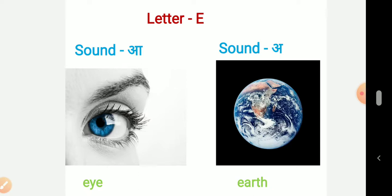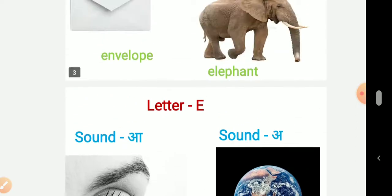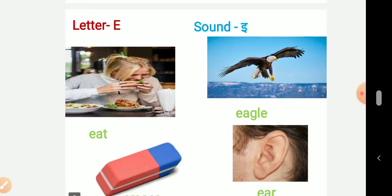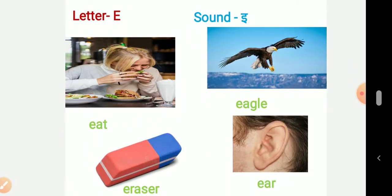So we have seen four sounds of letter E. E, A, AI, and earth. So children, practice reading these words and their sounds. Write one time neatly in your notebook. Bye.